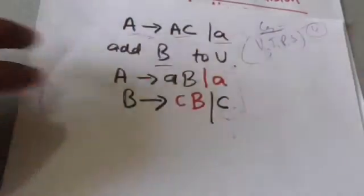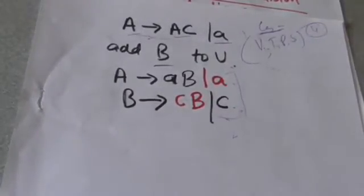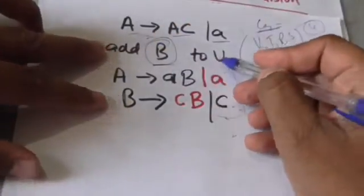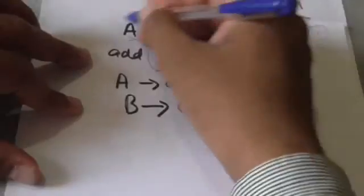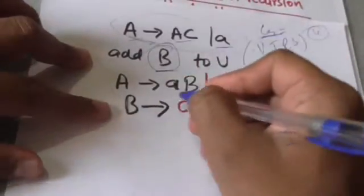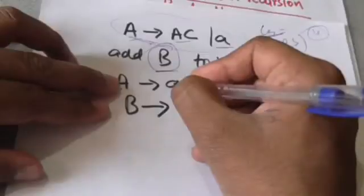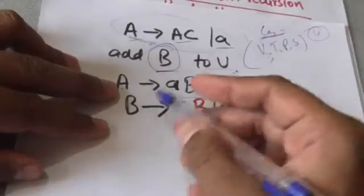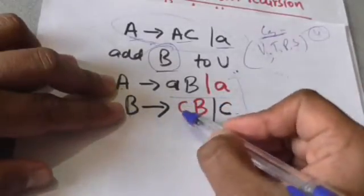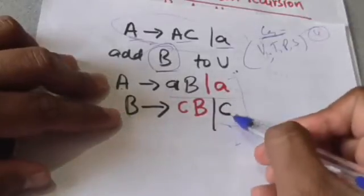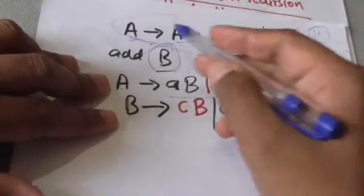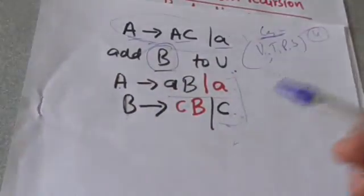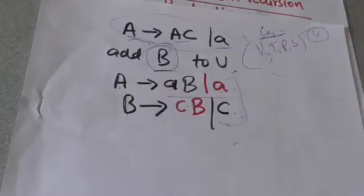We have to eliminate left recursion from these productions. For this, we add a new variable B to set V and replace these productions with: A derives aB, A derives a, B derives CB, and B derives C. If we replace the original productions with these productions, then the language generated by grammar G will not be affected.